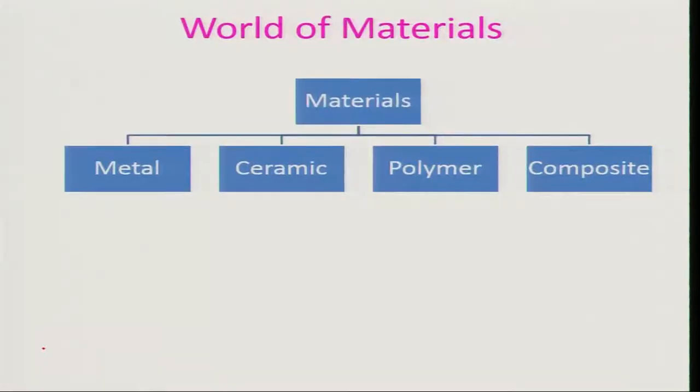Let us look at the world of materials. In ancient times the materials being used can be classified into four categories: metal, ceramic, polymer, and composite. If you look at metals, various kinds of metal were being used in ancient India — gold and silver, apart from copper and iron, and beside this there are alloys of various kinds like bronze and brass and several other things.